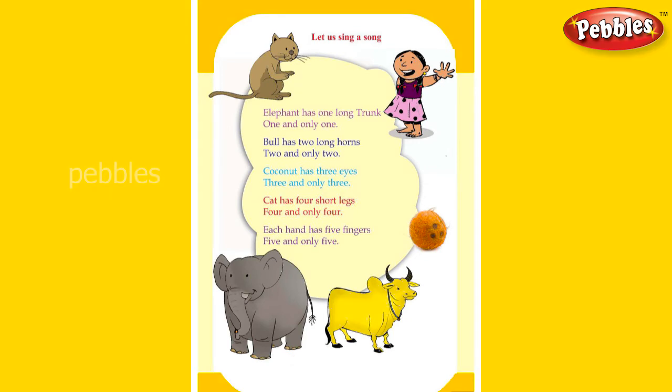Then all of you take page number 19. Let us sing a song. Elephant has one long trunk, one and only one. Bull has two long horns, two and only two.